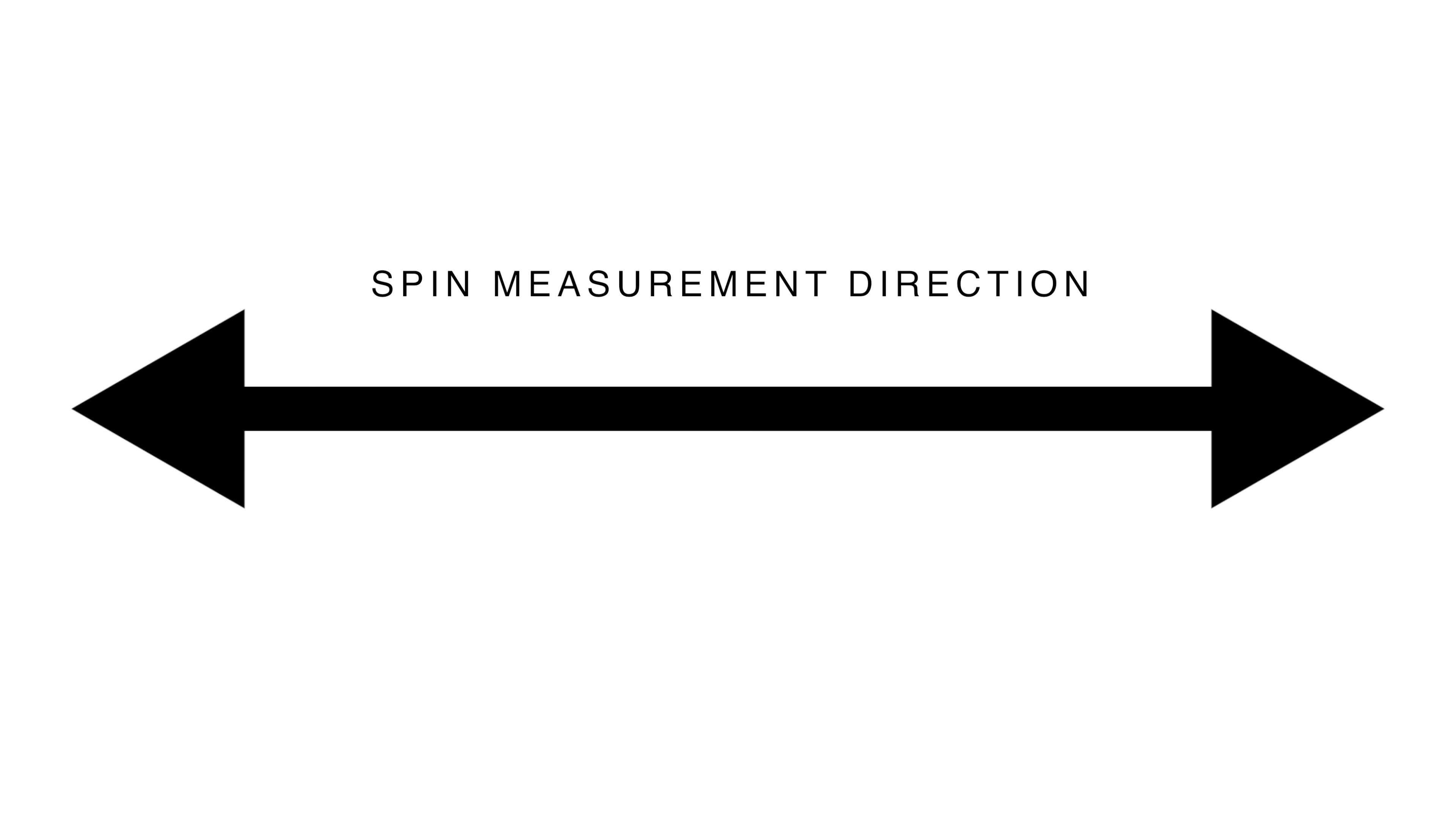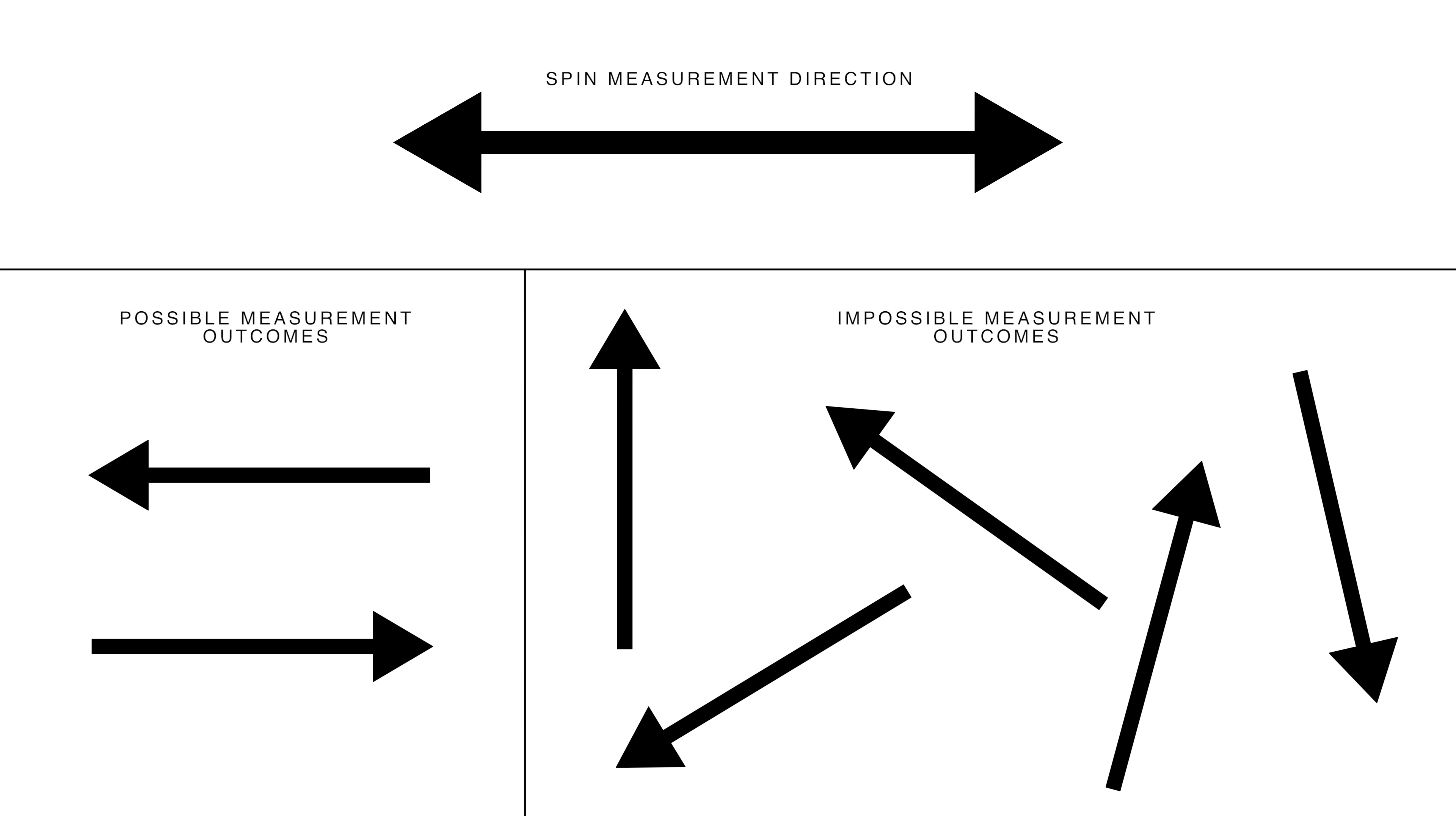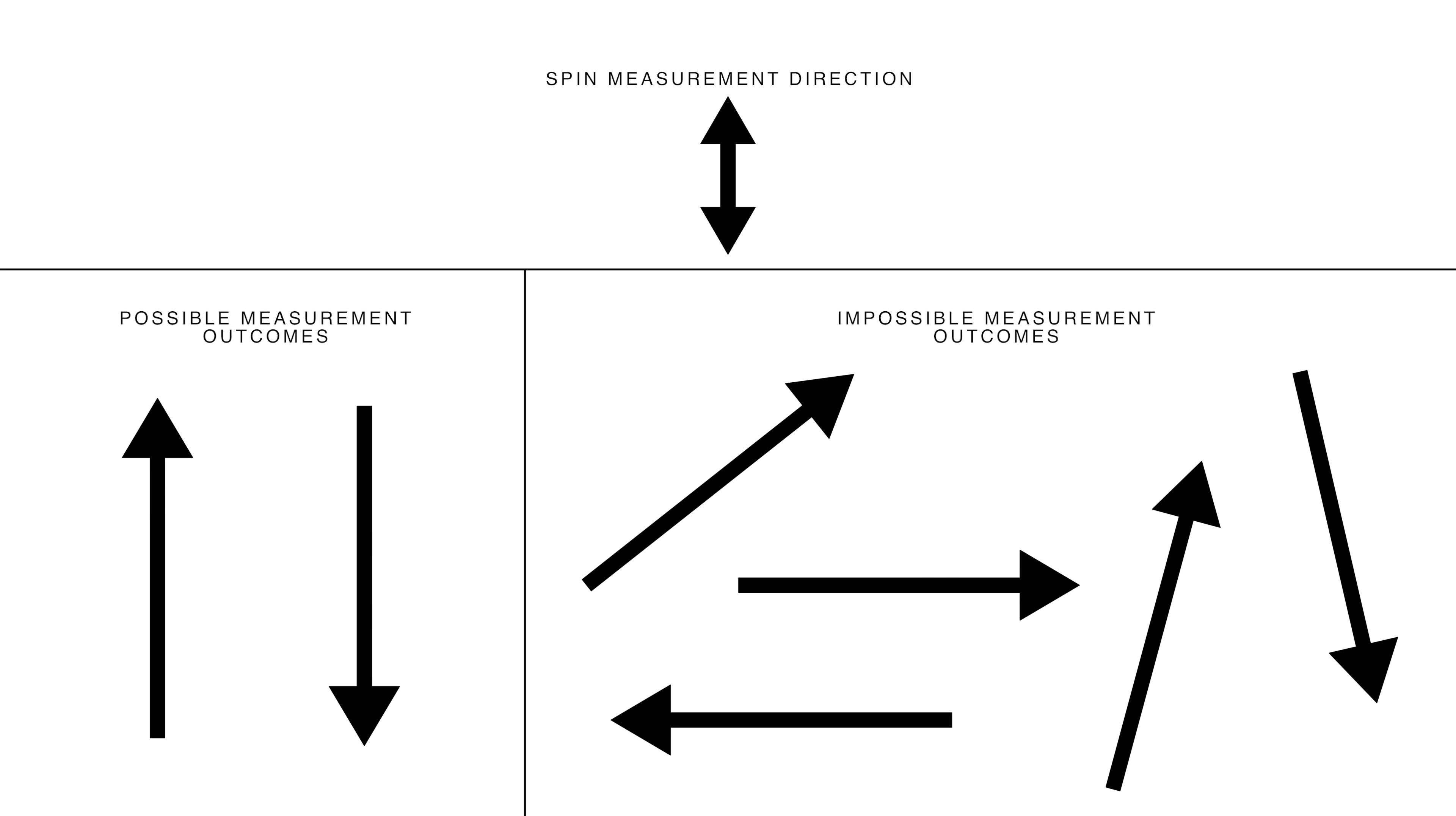So if you picked a measurement direction to be horizontal, the measurement of the spin direction could be left or right. It couldn't be up or down, forward or back, or any direction except for right or left. On the other hand, if you decided to measure in the vertical direction, the only outcomes of your measurement would be up and down. Left and right would be forbidden. It's certainly counterintuitive, but it's just a weird fact of life in the quantum world.